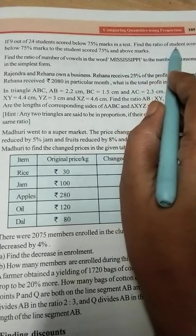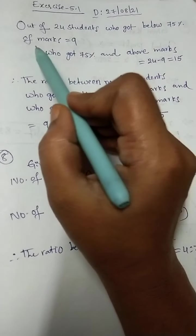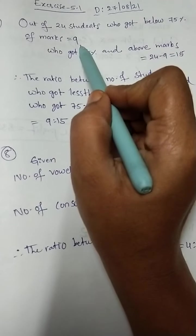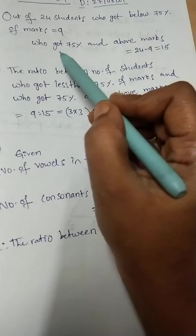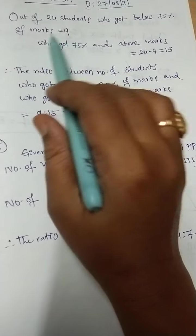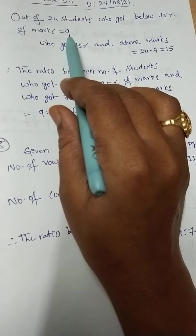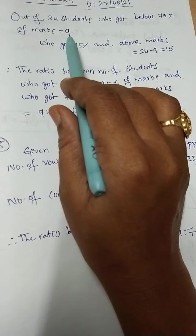Out of 24 students who got below 75% of marks, that is given as 9. Who got 75% and above marks? From total students, we need to subtract those who got below 75% of marks. Then we will get 15. 24 minus 9 equals 15.